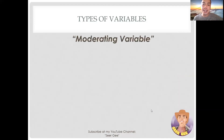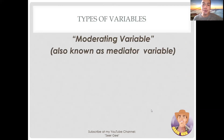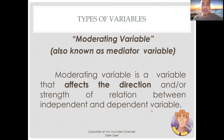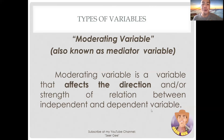Now, let's proceed to the next type of variable: the moderating variable, also known as the mediator variable. Moderating variable is a variable that affects the direction and/or strength of the relation between independent and dependent variables. One can be said to be a moderating variable if it has a strong contingent effect on the independent variable–dependent variable relationship. The presence of a third variable — the moderating variable — modifies the originally expected relationship between the independent and dependent variables. In short, a moderator variable is one that modifies the relationship between the two other variables.